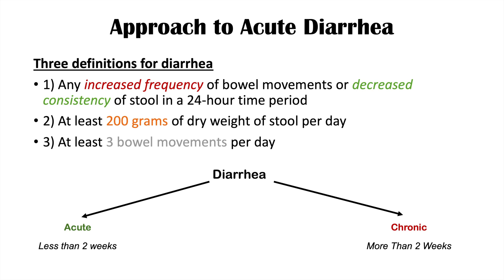There are some definitions like subacute diarrhea — sometimes that term is used for diarrhea between two to four weeks, and then chronic diarrhea defined as more than four weeks. But most of the time you're going to see acute diarrhea defined as less than two weeks and chronic diarrhea as more than two weeks.